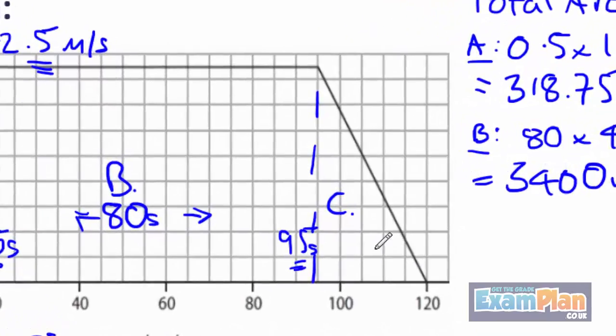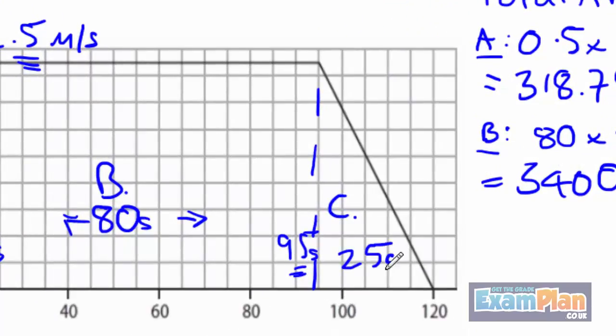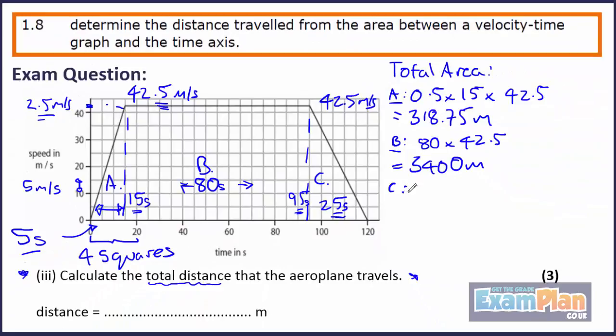Section C has a base of 20 seconds and a height of 42.5 meters per second. So the area is 0.5 times 25 times 42.5, which gives us an answer of 531.25 meters per second.